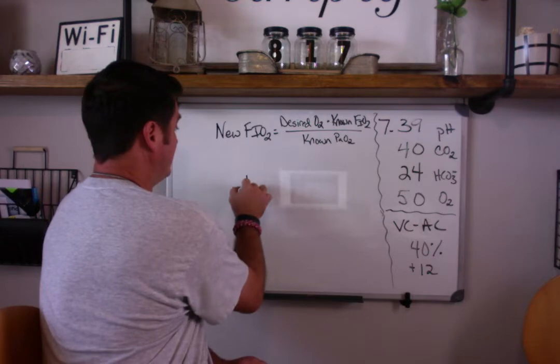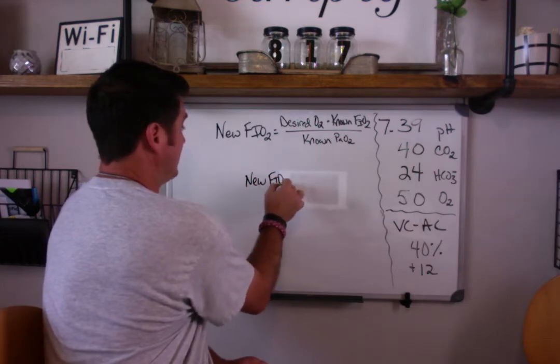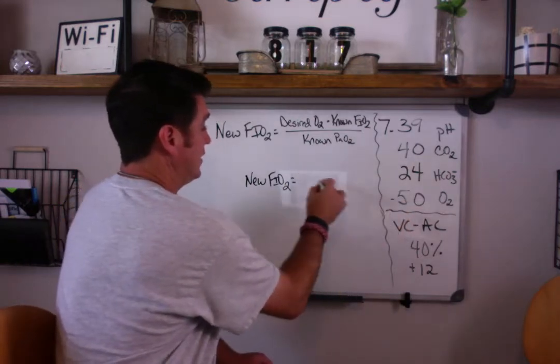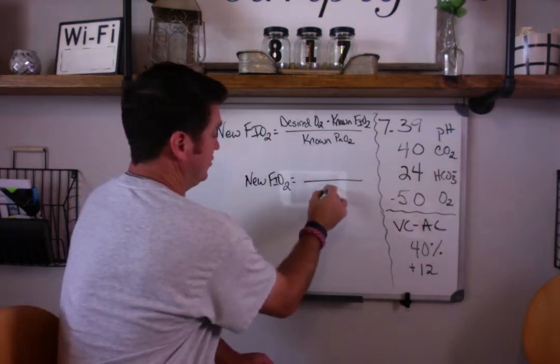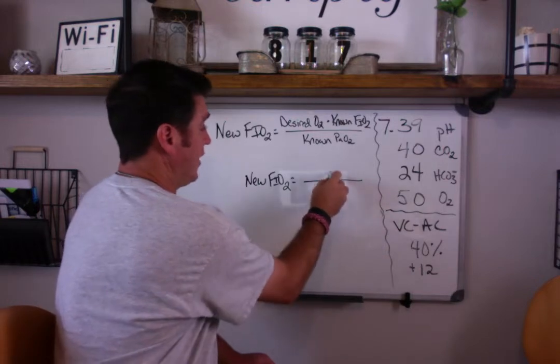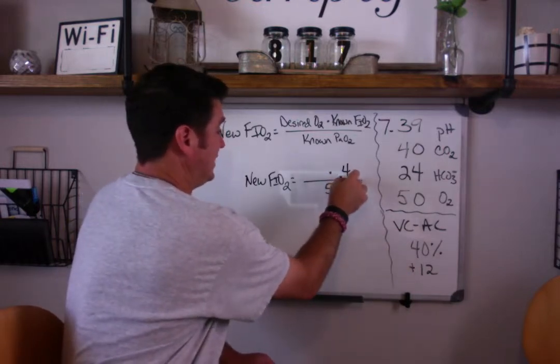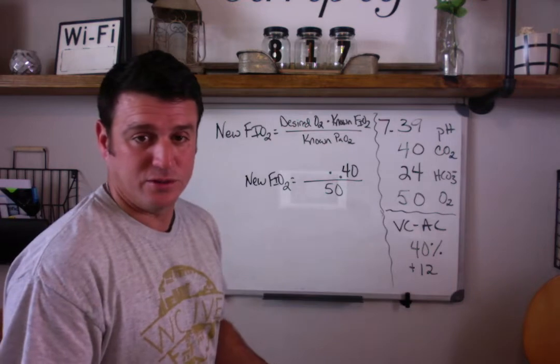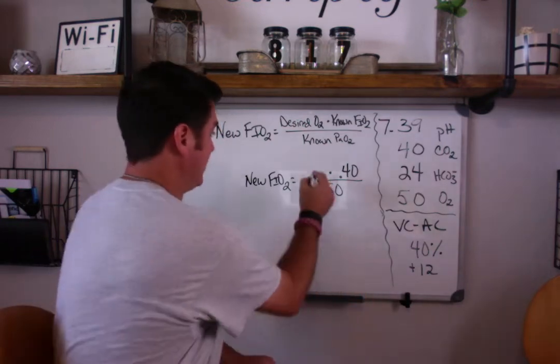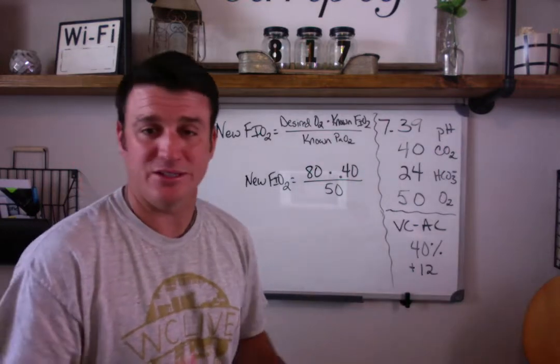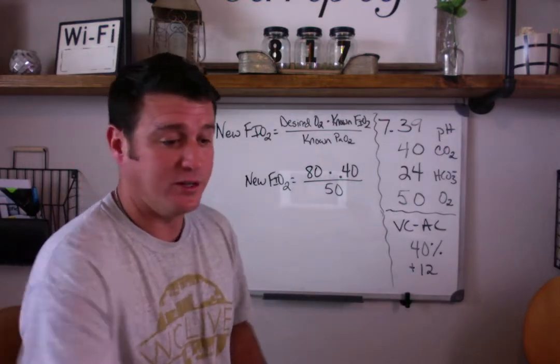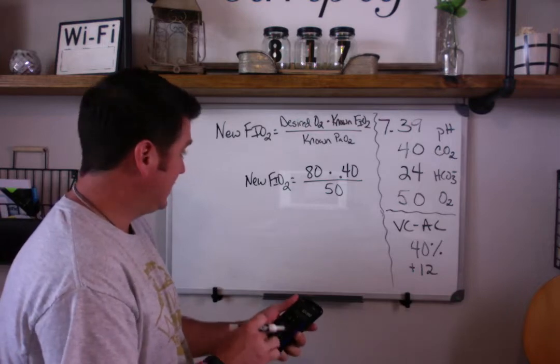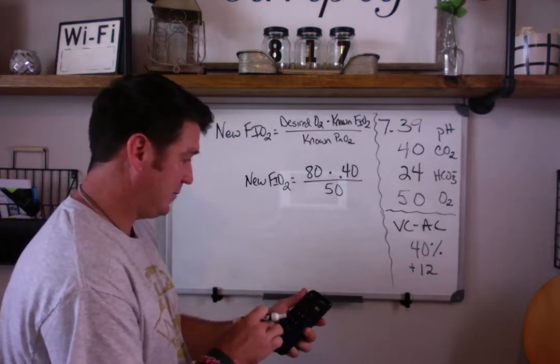If we plug our numbers in here, we're going to get a new FiO2. Desired O2: right now we're at 50, so let's plug in our known PaO2, that's 50. We know our FiO2, that's 40. You're going to use that in FiO2 form, which is with a decimal, 0.4. You're going to multiply that by your desired PaO2. Let's just say we want to get this patient up to 80. No reason for them to be sitting mildly hypoxemic. Let's just get them back up to 80 and be done with it. So we do this math: 80 times 0.4 equals 32.